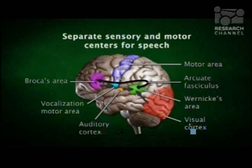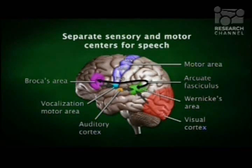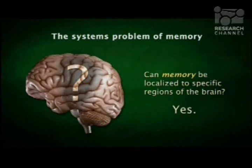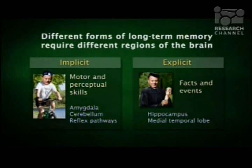We then asked: can memory specifically be localized to regions of the brain? Again, the answer was yes, and again the result is sophisticated. There are different kinds of memory storage — explicit and implicit — stored in different areas. One involves the hippocampus and medial temporal lobe; the other involves the amygdala, cerebellum, and reflex pathways.